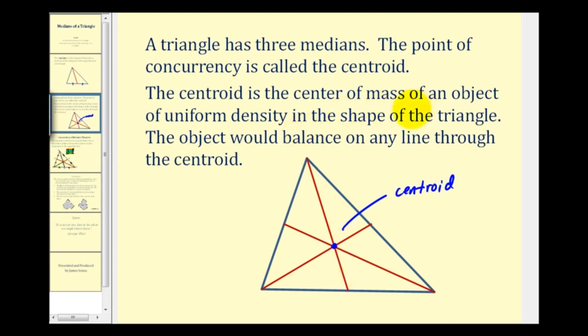The centroid is also the center of mass of an object of uniform density in the shape of a triangle. Which means the object would balance on any line through the centroid.